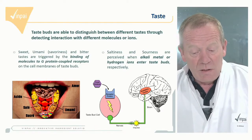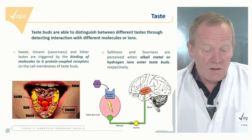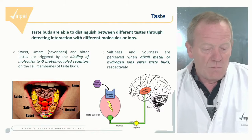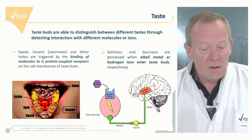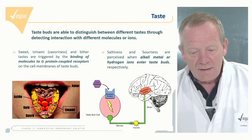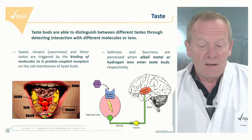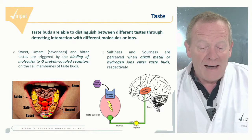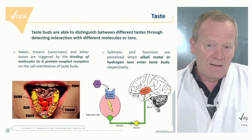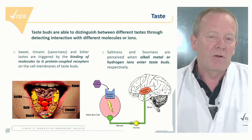There are mostly two types of detection mechanisms. One is the connection through cell receptors, mostly for sweet, umami, and bitter tastes. For saltiness and sourness, the connection is made with specific alkali metal or hydrogen ions, which can enter directly into the cells through what is called a proton channel.